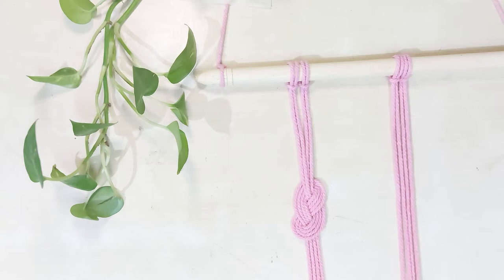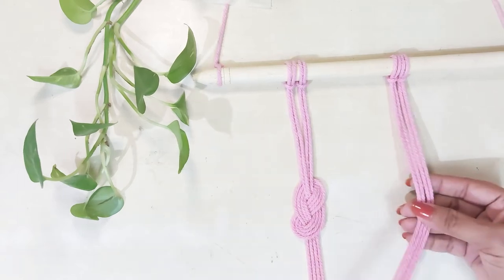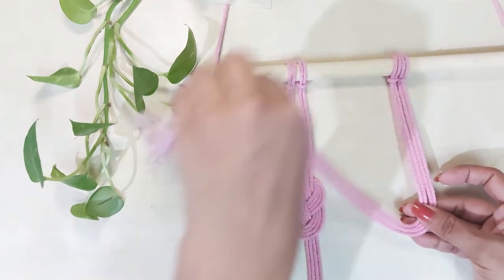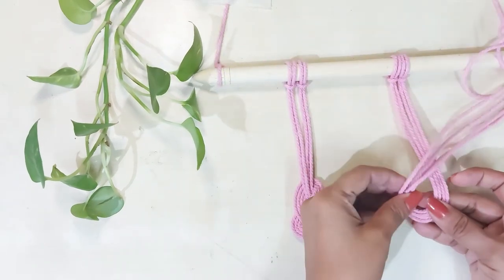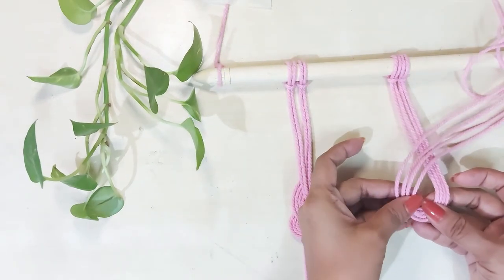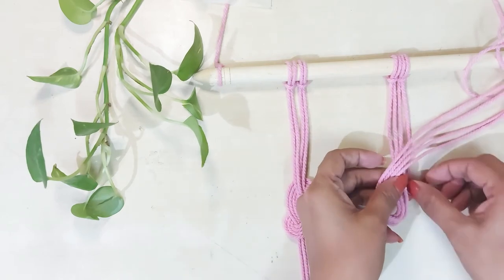...you can get creative and add them to any of your projects. So let's begin. Take two strings and tie a lark's knot. I will show the sailor's knot on these four strings, but you can also use a thick string for the similar pattern.